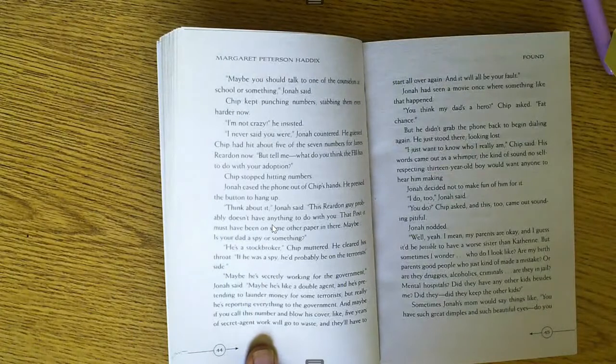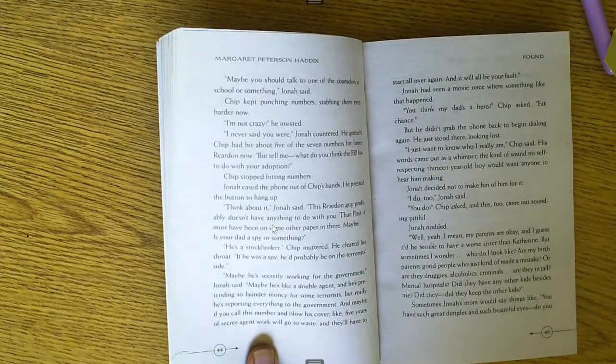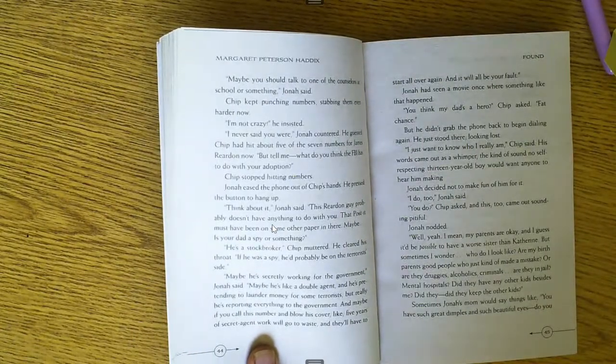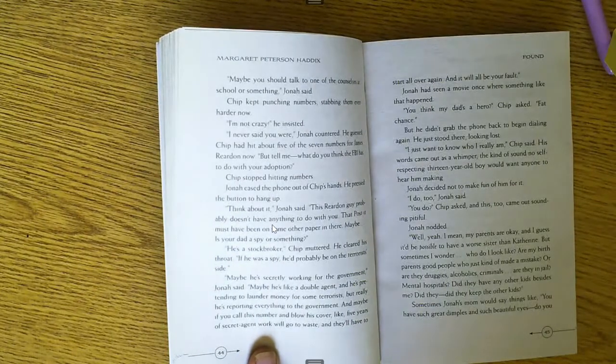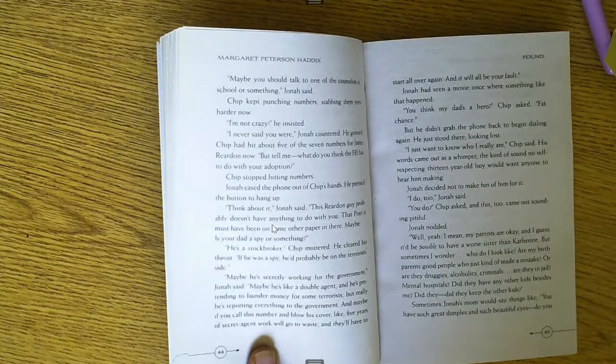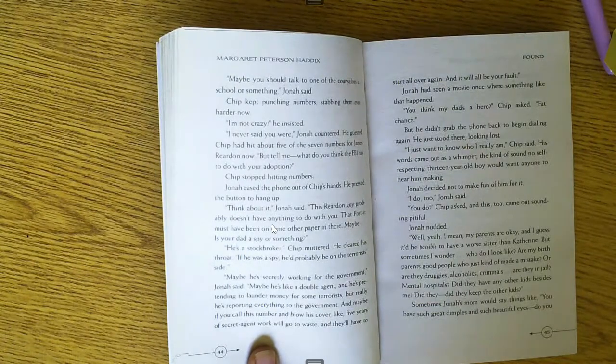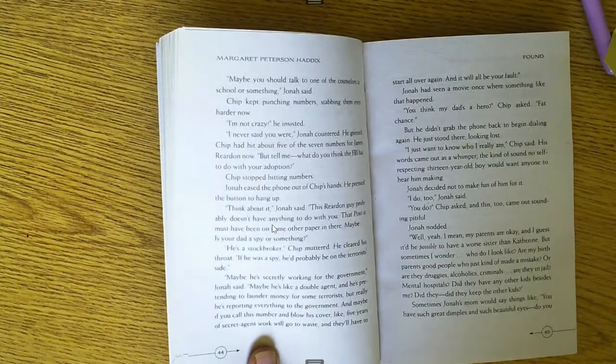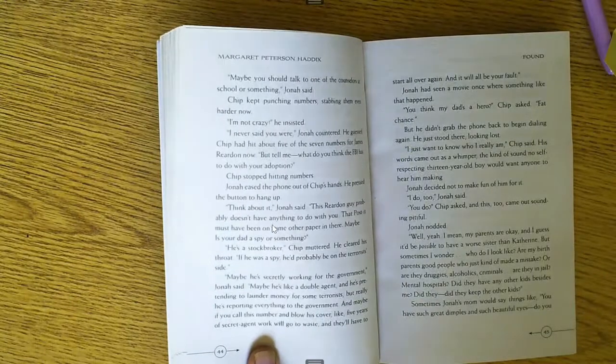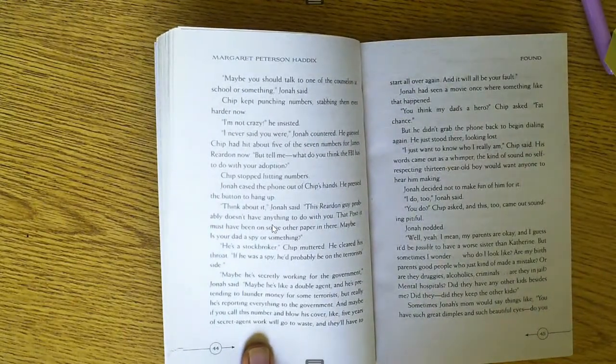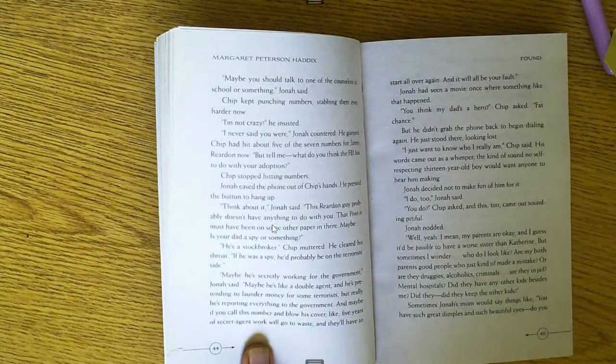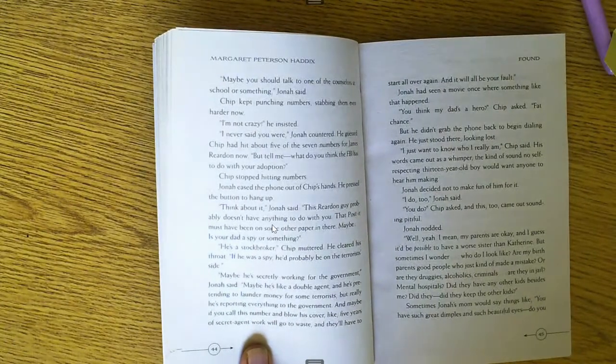Maybe he's secretly working for the government, Jonah said. Maybe he's like a double agent and he's pretending to launder money for some terrorists. But really, he's reporting everything to the government. And maybe if you call this number and blow his cover, like five years of secret agent work will go to waste and they'll have to start all over again. And it will be all your fault.